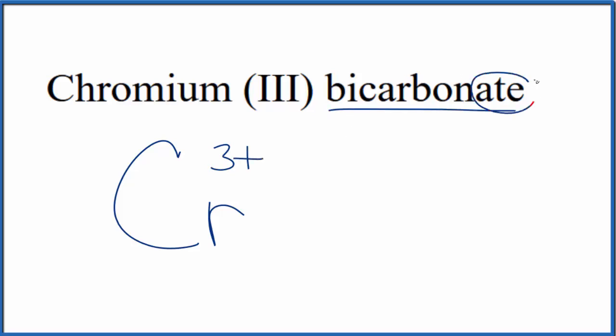Bicarbonate, when you see A-T-E, you know that this won't be found on the periodic table. This is a polyatomic ion, so you need to memorize that the bicarbonate ion is HCO3-. Or if you're allowed, you can look it up on a table of polyatomic ions.